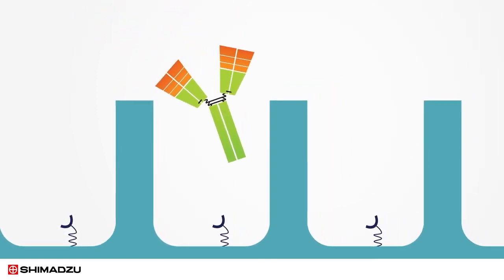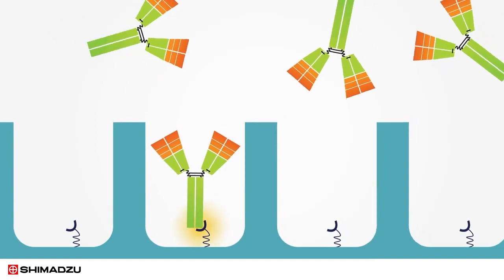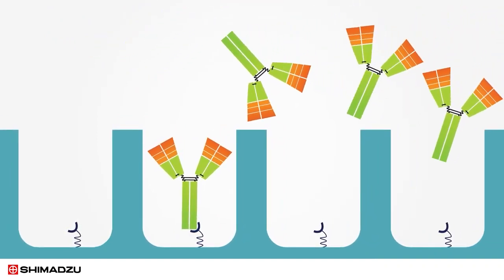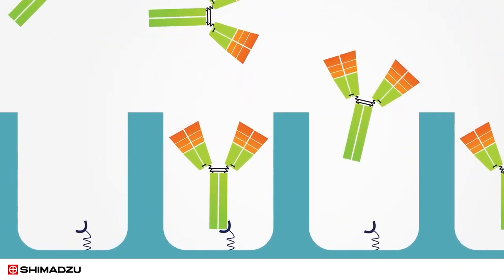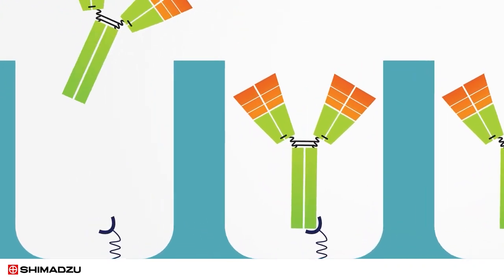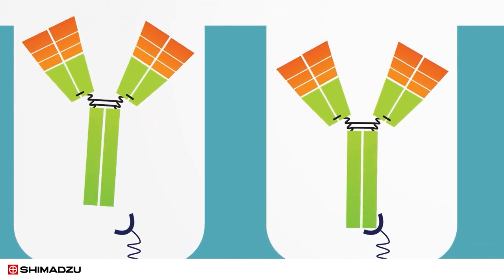During two wash cycles, the protein A ligands capture the antibodies and hold each one in place and in the proper orientation so that the FAB protein region is facing out. Non-antibody material or matrix is removed during the wash cycles.